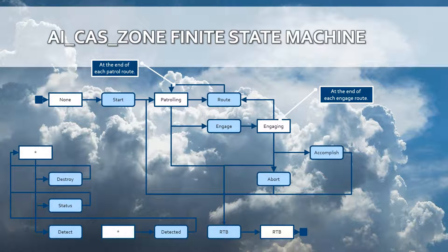To provide a close air support function, a new class has been added into the MOOSE Framework: the AI CAS Zone class, which is a Finite State Machine. A Finite State Machine is a process that controls an AI group through that process, letting it do different activities depending on which state the process is in.